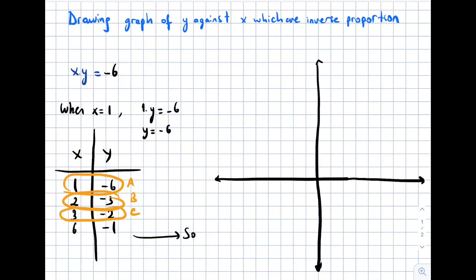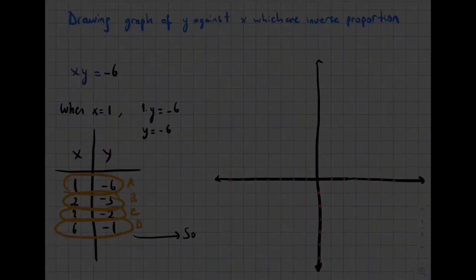Those points are 1 and negative 6, point A, let's say point B, point C, point D. We have four points with xy coordinates: (1,-6), (2,-3), (3,-2), and (6,-1).